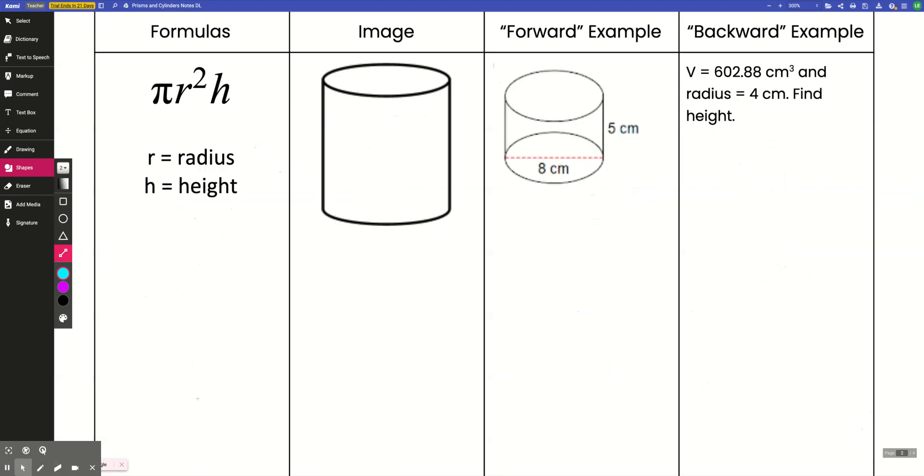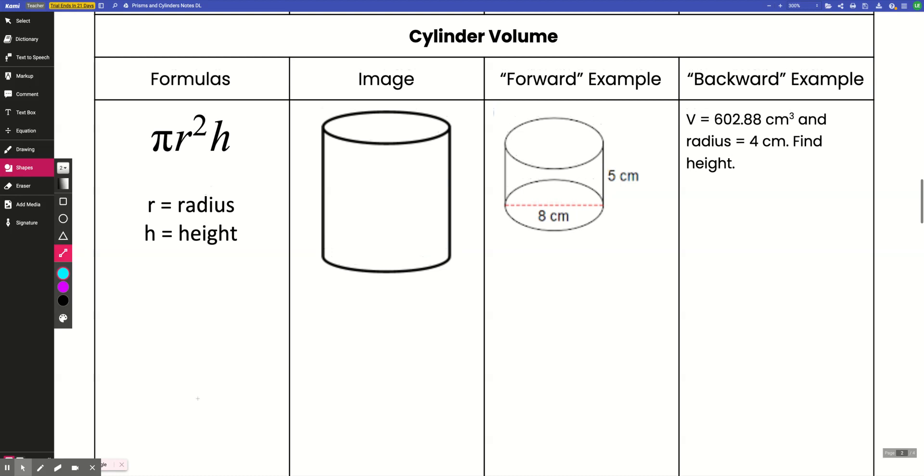All right, folks. So here we are for the volume of a cylinder. The formula for the volume of a cylinder is pi r squared h. But remember, pi r squared is just the area of the circle. So that's capital B, the area of the base shape. So it still fits in with the general formula, which is that the volume is equal to capital B h. All follows the same pattern.